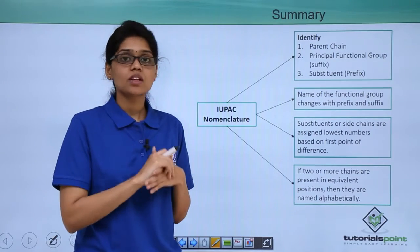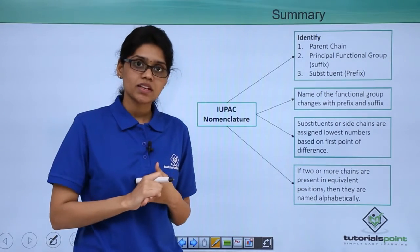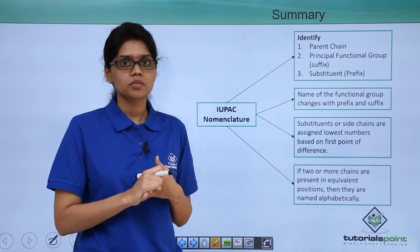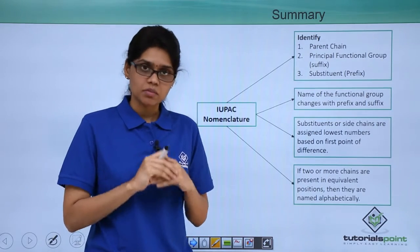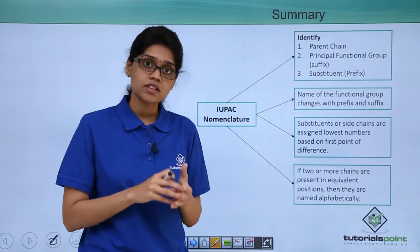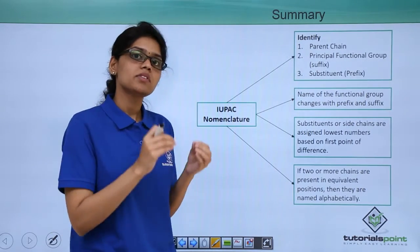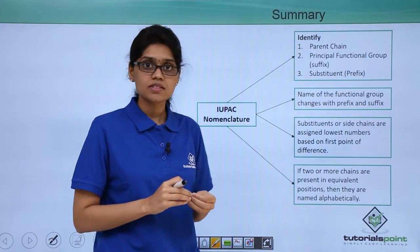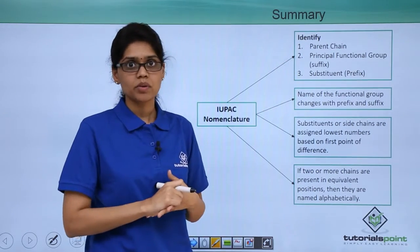So far we have seen a lot of roots in IUPAC nomenclature and we have also discussed examples to understand them in detail. Now to summarize: we have seen how to identify the parent chain or longest chain, and how to identify the principal functional group, which will be your suffix and which will determine the root name of your organic compound.